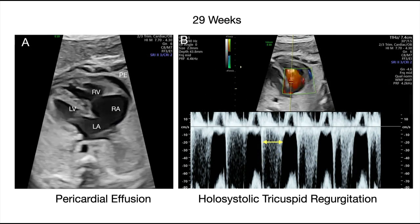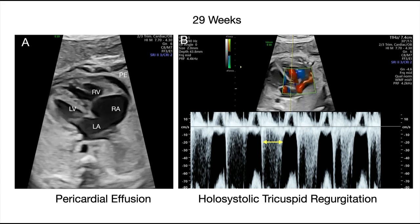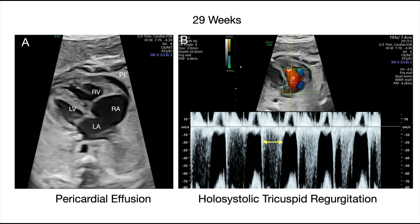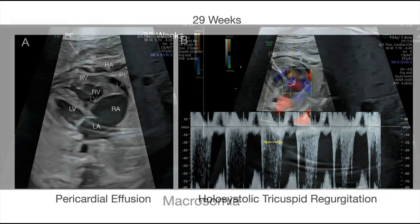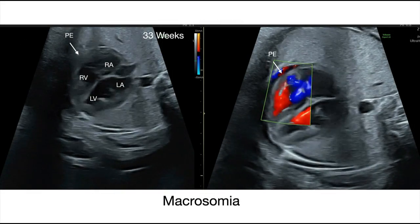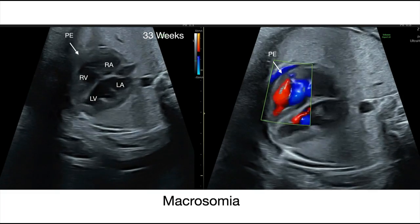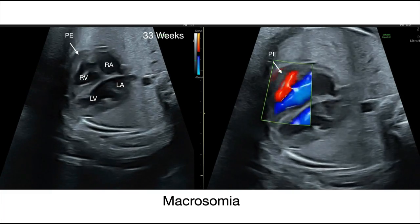In this example, the pericardial effusion in Figure A was associated with holosystolic tricuspid regurgitation as indicated by the yellow arrows in Figure B, commonly observed in fetuses with growth restriction. Another method to identify a true pericardial effusion is to use color or power Doppler ultrasound. Because of movement of the pericardial fluid during systole and diastole, the color of the Doppler movement of pericardial fluid is opposite in color to blood flow within the ventricular chambers. I hope this brief summary will allow you to enhance the screening examination of the fetal heart.